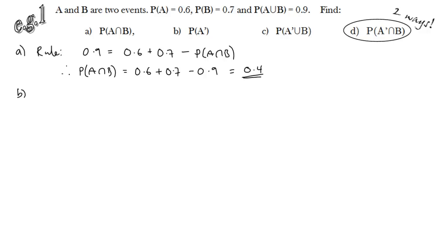Part b is even easier — quite trivial really. The probability of not A is always one minus the probability of A. There are other ways to work it out, but if you know the probability of A, that's by far the quickest. So subtract 0.6 from 1 and you get 0.4.